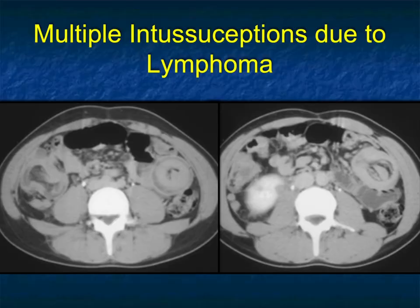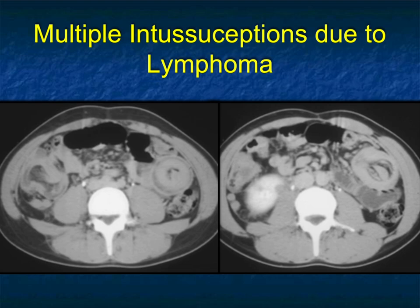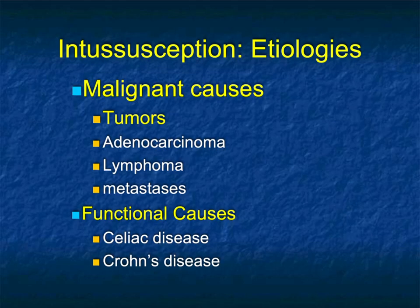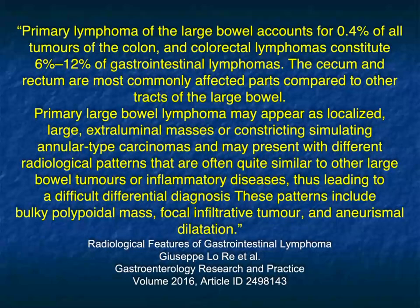As mentioned for small bowel, polypoid lesions can intussuscept. Here's a patient with multiple intussusceptions due to multiple polypoid lesions. There's also tumor in the patient's right kidney — also due to lymphoma. When thinking about intussusception causes, tumors are at the top of the list: adenocarcinoma, lymphoma, and metastases. There are also functional causes like celiac disease and Crohn's disease, as well as many benign tumors.